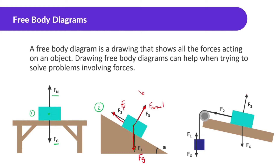In this third diagram, we have the normal force and force of gravity going straight down. Force two — the string is pulling it — so that's the force of tension. This is also the force of tension with the string pulling it up, along with the force of gravity on the blue box.